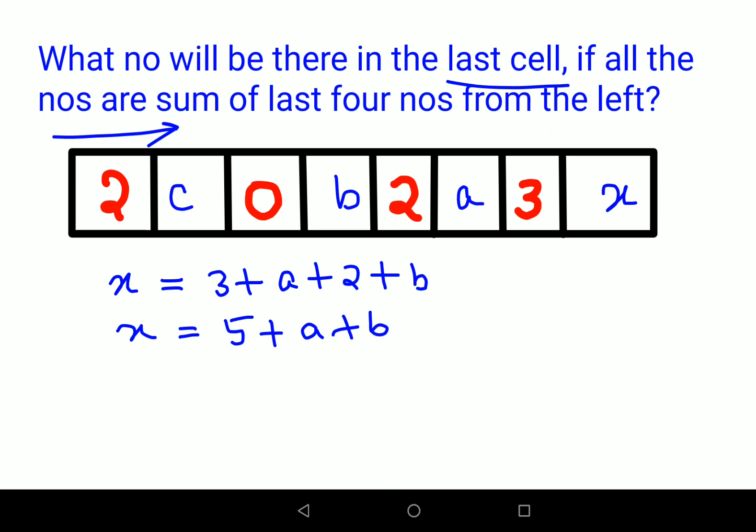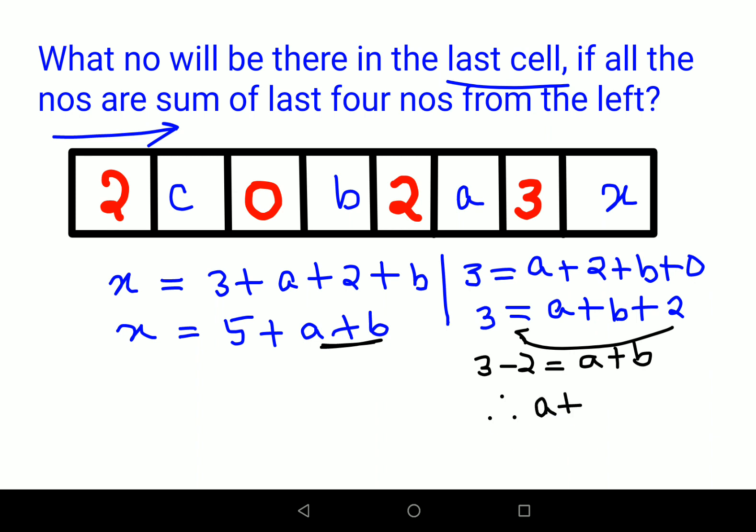Similarly here I can also say that 3 will be equal to what? a plus 2 plus b plus 0. So I can say that a plus b plus 2 equals to 3. Now if you look closely I want the value of a plus b. So let's shift this 2 on this side. So I will have 3 minus 2 equals to a plus b. So therefore I can say a plus b equals to 1.